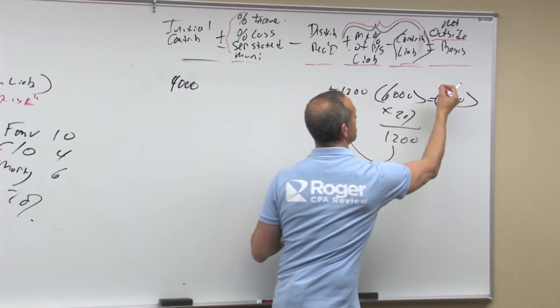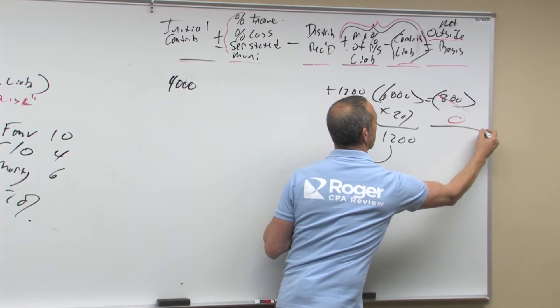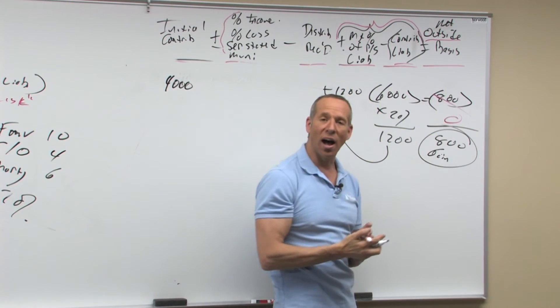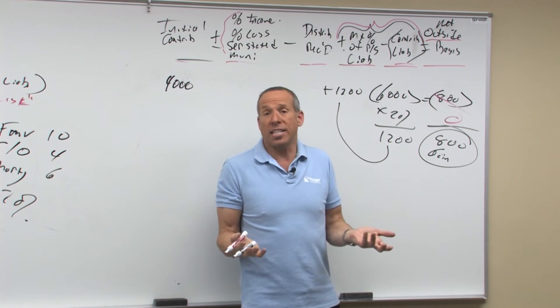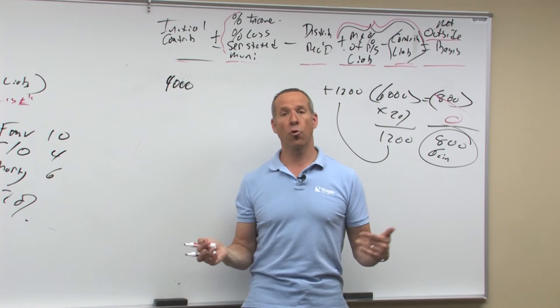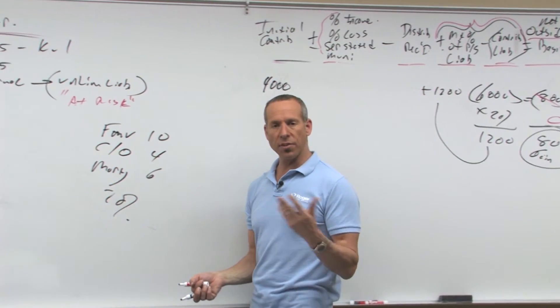So I've got four plus 1.2 minus six equals 800 negative. Can your basis ever go negative? No. So it stops at zero, therefore I have an $800 gain. Why do I have a gain? Because I should have a negative basis, instead I have a zero basis, therefore the rest was a gain.